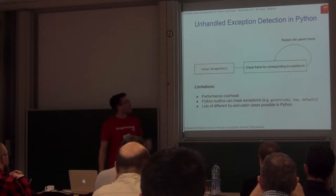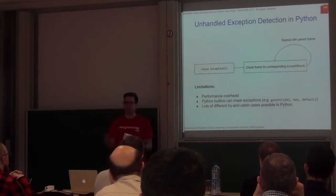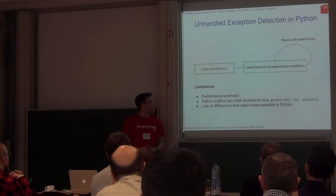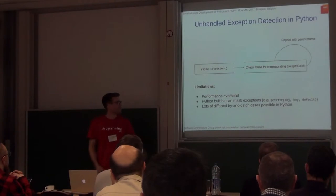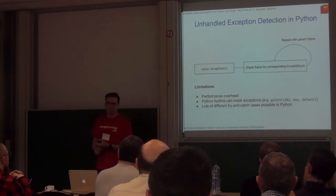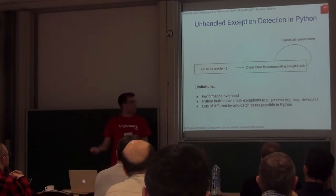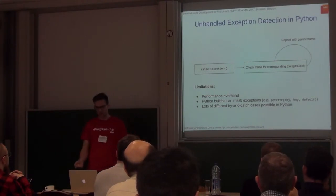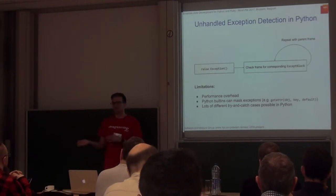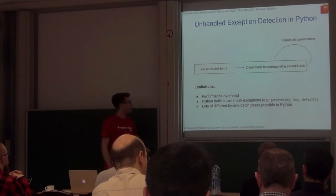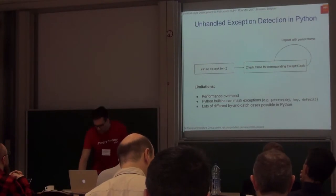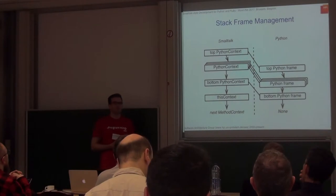If we go through all the frames and don't find anything, we're already in a debugging session and taking time is fine in that case. There are also some Python builtins that can mask exceptions — for instance, if you use `getattr` with a default parameter and there's an AttributeError in your program, `getattr` will mask that and give you the default value. We also have to make sure that works. There are a lot of try/except cases possible in Python — for instance, a lot of meta-programming you can use to define a try/except block — so it's really hard to find out whether an exception will be caught or not.